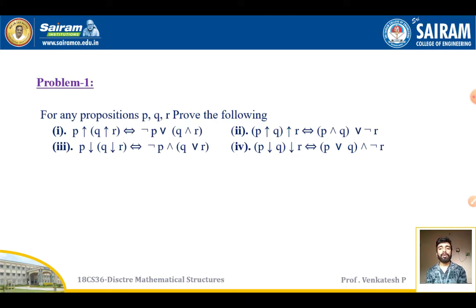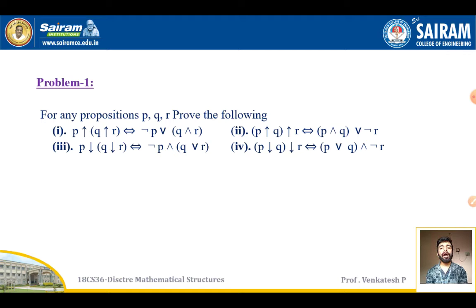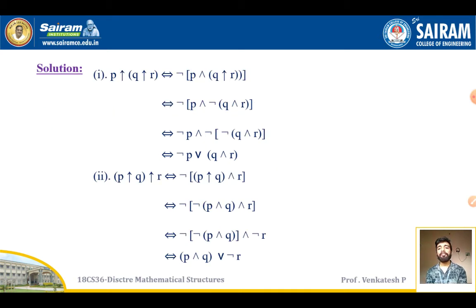Now, problems based on NAND and NOR. For any propositions P, Q, R, we need to prove: (1) P NAND (Q NAND R) equals negation of P OR (Q AND R); (2) (P NAND Q) NAND R equals (P AND Q) OR negation of R; (3) P NOR (Q NOR R) and (P NOR Q) NOR R identities.